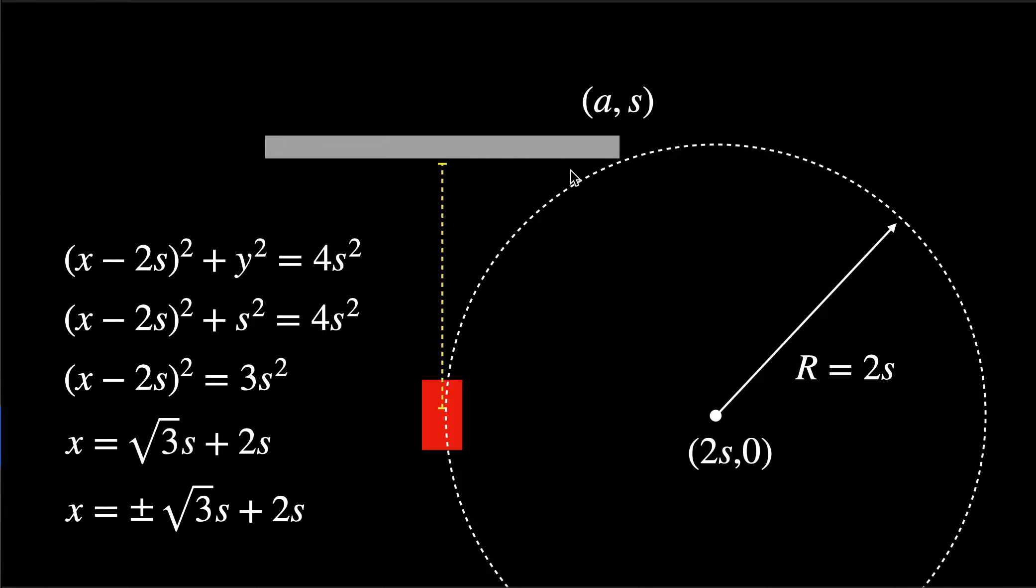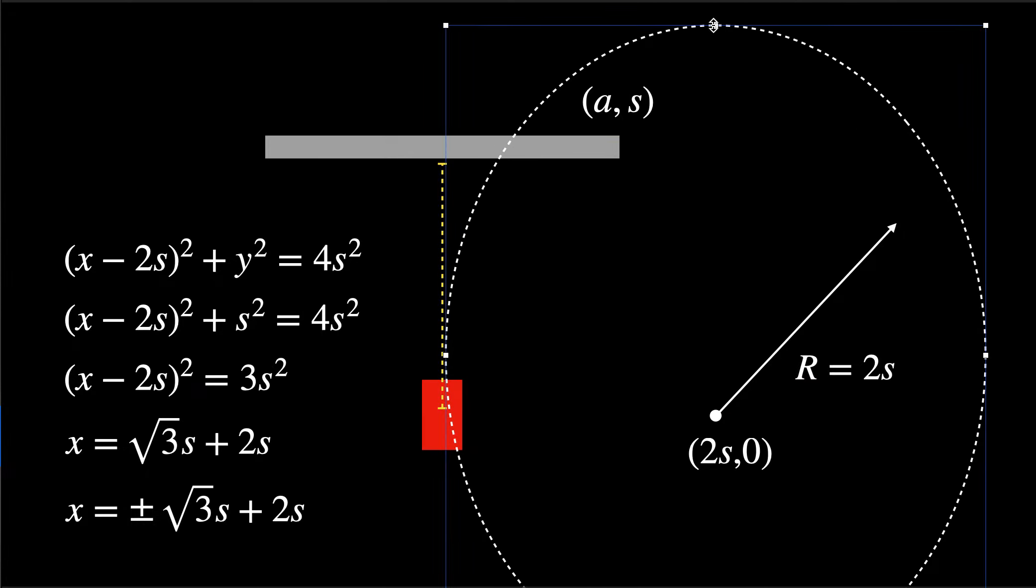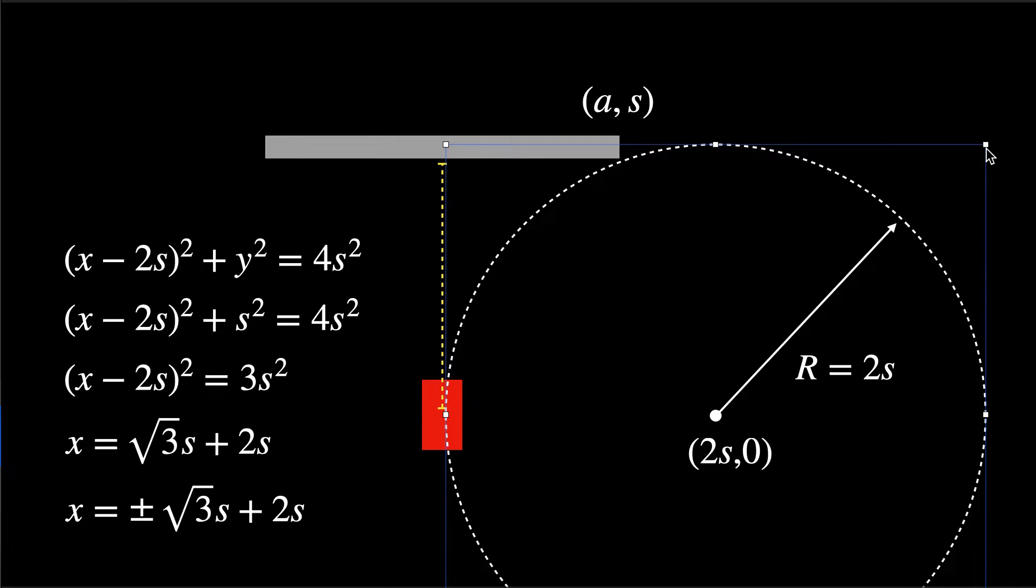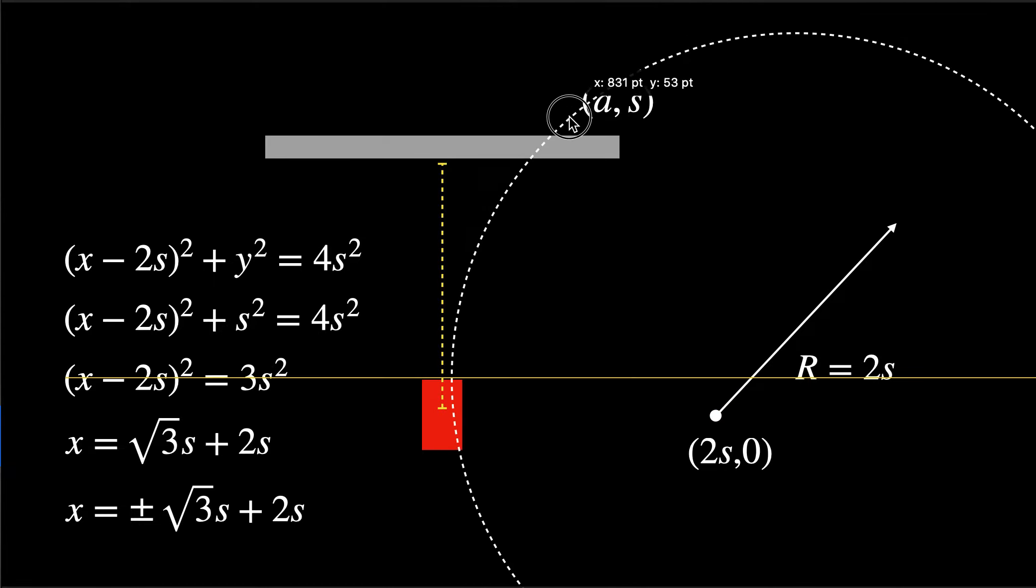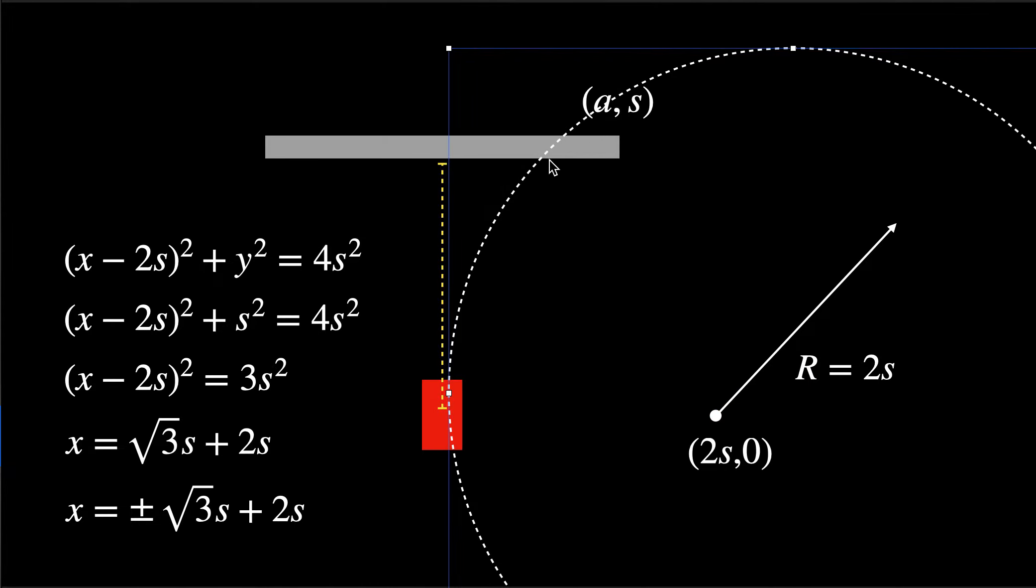So if I factor out the s, I get this location is actually going to be -√3 + 2. The plus value is for where the circle, let me make this bigger. So this is going to be two locations where y is equal to s. The √3 + 2 is over here, and the 2 - √3 is over here, and that's the point I want.